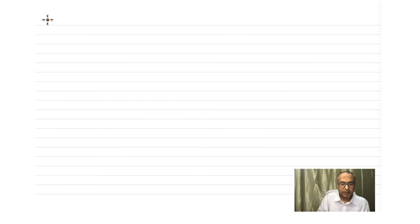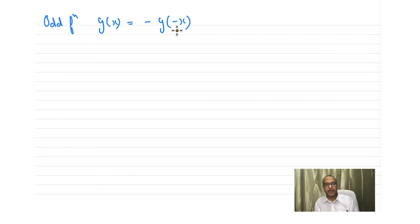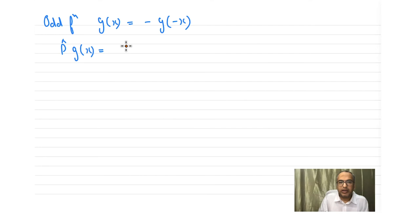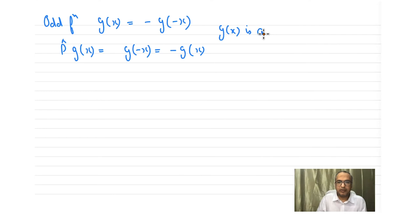Now let's see what happens if we apply parity on an odd function g(x). The definition of an odd function tells you that g(x) = −g(−x). If we apply parity on g(x), we get g(−x), which gives us −g(x). In this situation, we say that g(x) is anti-symmetric with respect to parity.